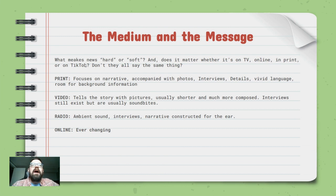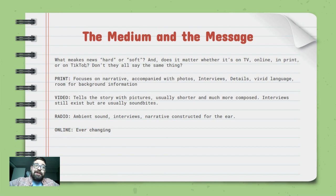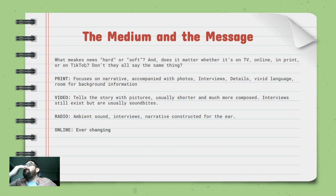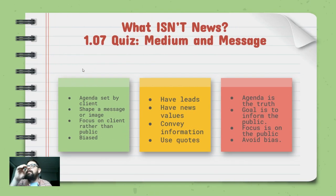Online journalism is something we have to talk about in an ever-changing, malleable way because it keeps changing so rapidly. Facebook Live, Facebook Reels, TikTok, Instagram, and Twitter — now called X as of this recording, though who knows what it'll be called next year — all of it is shifting constantly.